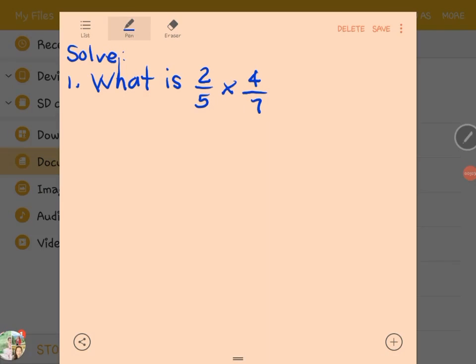Let us solve this mathematical statement. What is 2/5 multiplied by 4/7? First, we have to write 2/5 multiplied by 4/7.